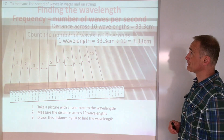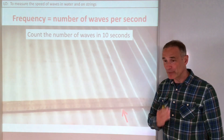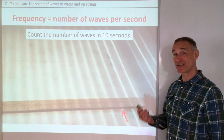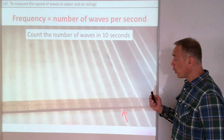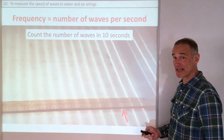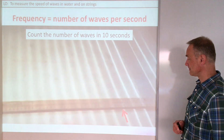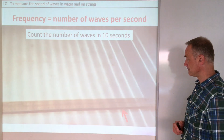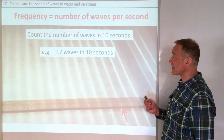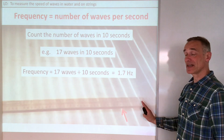How are we going to measure the frequency? Frequency is the number of waves every second, but you're not going to be able to count waves in just one second — you've got to count over a longer time. I suggest ten seconds, again easy to remember. Watch the video and count how many waves pass a point in ten seconds. I counted seventeen waves in ten seconds.